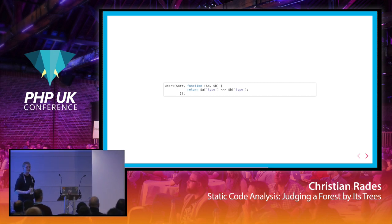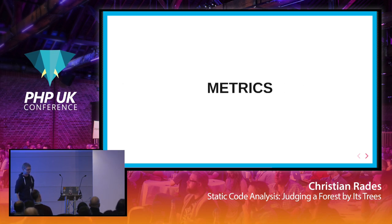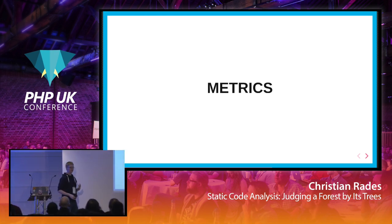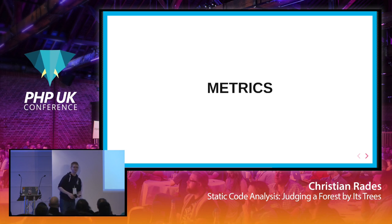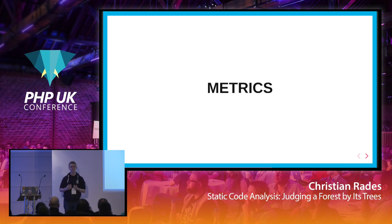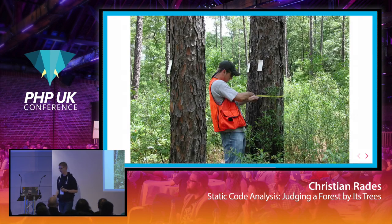Now I want to talk about metrics. We can try to satisfy tooling all we want, but we still want an easy quality measure — a way to know if our software is going in the right direction, becoming more maintainable rather than less. People have to measure trees to know if they are sick.